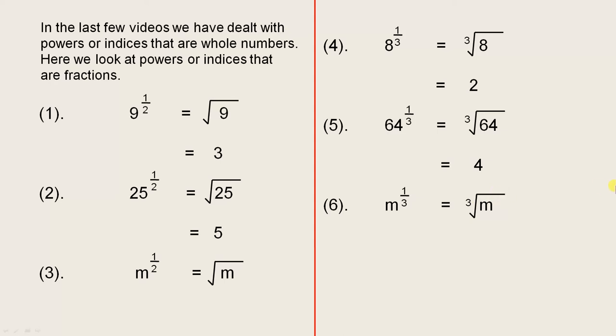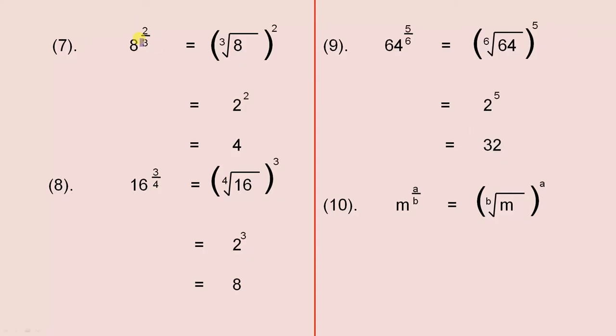Let's have a look at some more interesting examples. Here we have 8 to the 2 thirds. Notice the numerator is a 2, the denominator is a 3. We saw in the previous slide, whatever the number is under here, because that's a 3, it's the cube root of 8. The 2 means that you place all those in brackets and you square the answer. So whatever the numerator is, that number goes here. So it's a 2, so the answer is squared. The cube root of 8 is 2. 2 squared, because that's a 2, is 4. Quite straightforward.